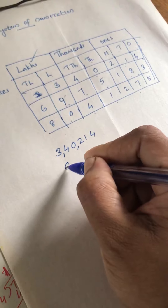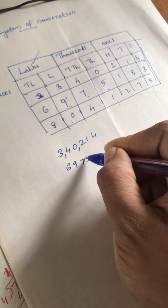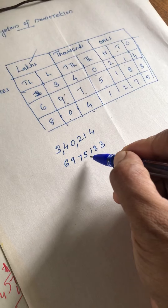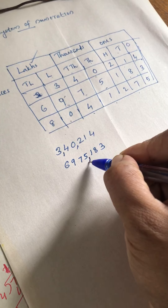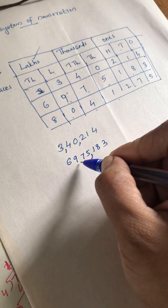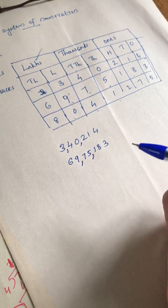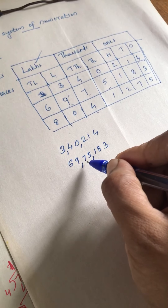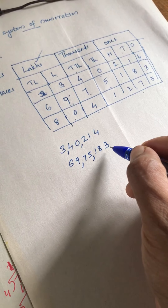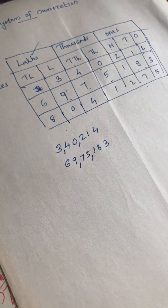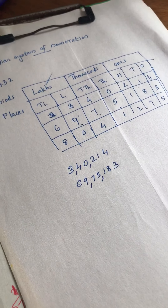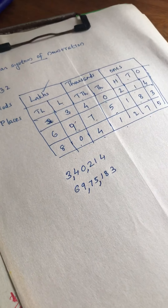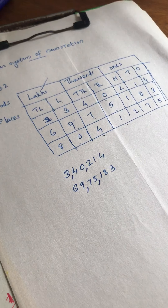For the next number, sixty-nine lakhs, seventy-five thousand, one hundred eighty-three — how do we insert the comma? First, after one period we insert a comma, then after the thousands period we insert another comma. In this way, we can read and insert commas in the Indian system of numeration. Thank you.